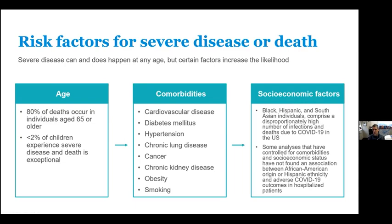Socioeconomic status is also an issue. Outcomes across different ethnic groups in the United States and in countries like the United Kingdom can be quite disparate. Black, Hispanic, and South Asian individuals seem to comprise a highly disproportional share of infections and deaths due to COVID. When you control for comorbidities and socioeconomic factors, some of these disparities can go away, suggesting it is more of a socioeconomic problem — if you don't have access to healthcare or resources to be healthy, you're more likely to have comorbidities and less likely to get care in time.